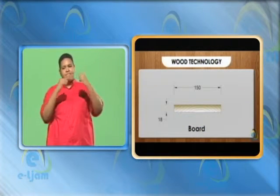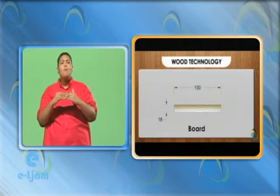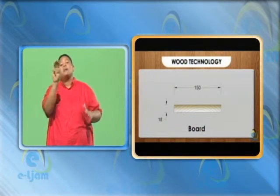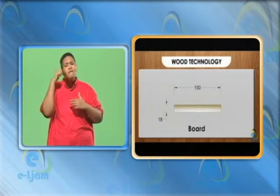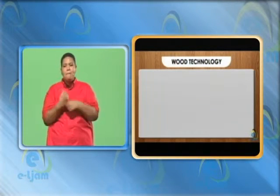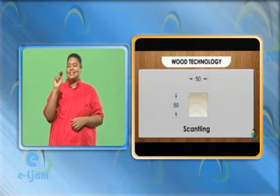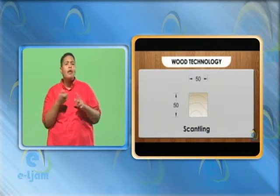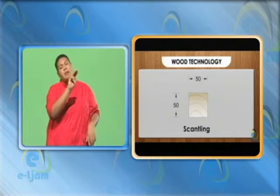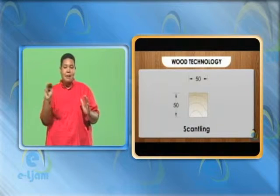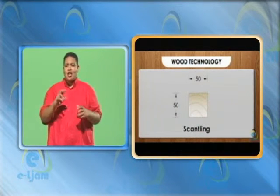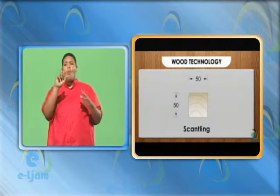Board — a piece of timber with a thickness less than 50 mm and a width of 100 mm or more. Boards are used in the construction industry for flooring, shelving and furniture making. Scantling — timber having thickness ranging from 50 mm to 100 mm and width varying from 50 mm to 115 mm. These are used for smaller beams and frames such as rafters for roofs, wall studs and floor joists.